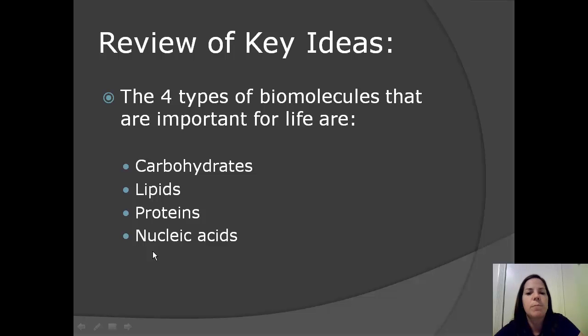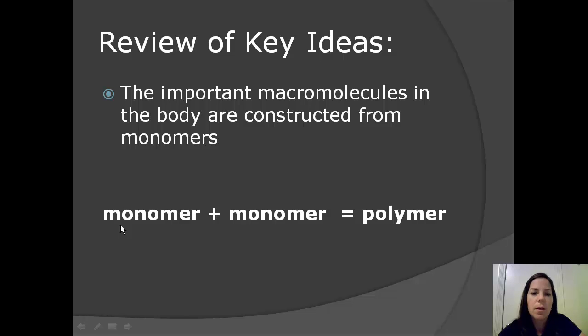So there's four types of biomolecules that are important in life. So let's review the key ideas. The first one is carbohydrates, lipids, proteins, and then nucleic acids. The next important idea that we talked about is the important macromolecules in the body are constructed from monomers. So one monomer, such as glucose, plus another glucose, can create a polymer glycogen.